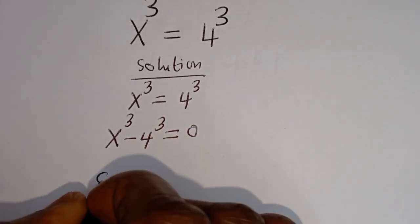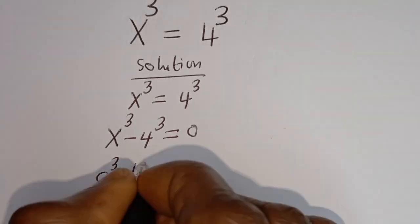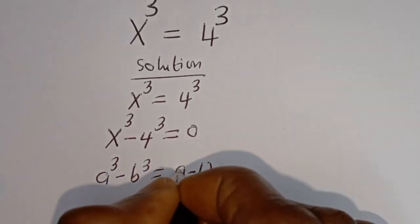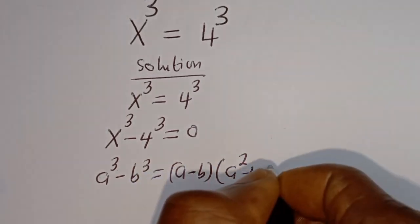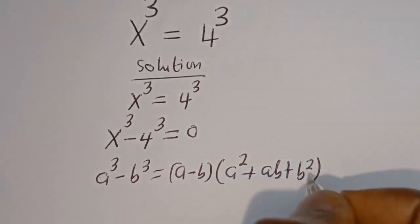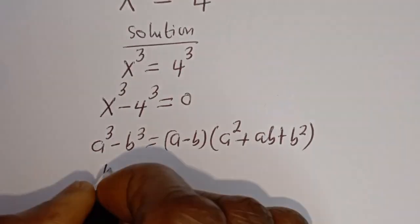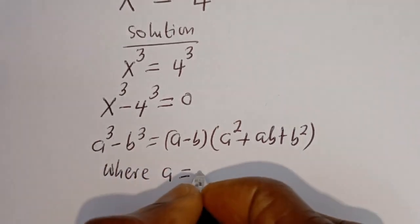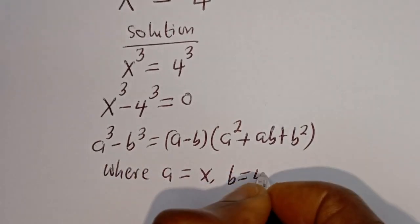Now take note of this: if you have a to the power of 3 minus b to the power of 3, this is equal to a minus b, bracket a squared plus ab plus b squared. Then here, a is equal to s and b is equal to 4.